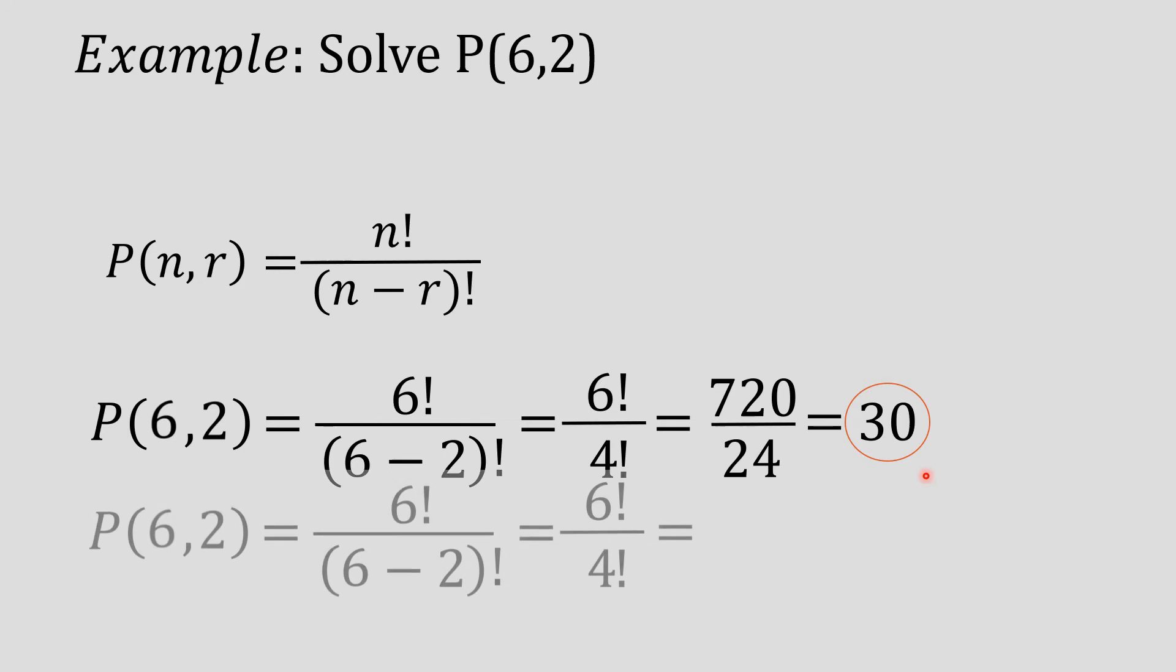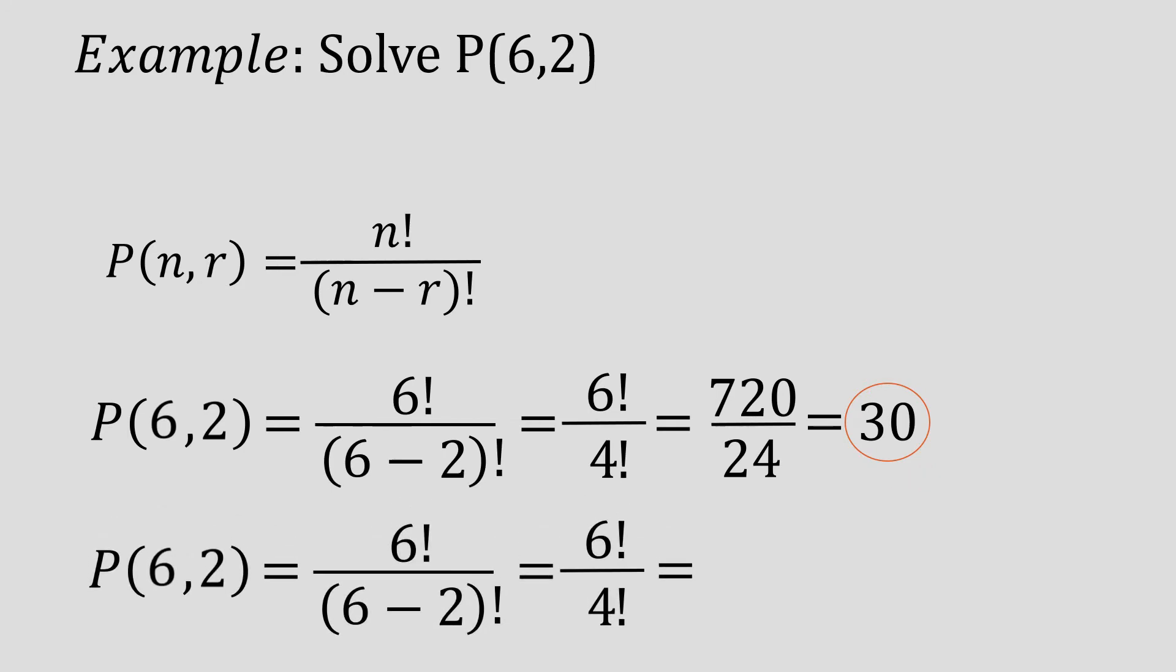Here's another way to simplify 6 factorial over 4 factorial, and that is just by using the definition of factorials. 6 factorial is 6 times 5 times 4 factorial. We will stop with 4 since our denominator has a value of 4 factorial. With that, we can cancel out 4 factorial.